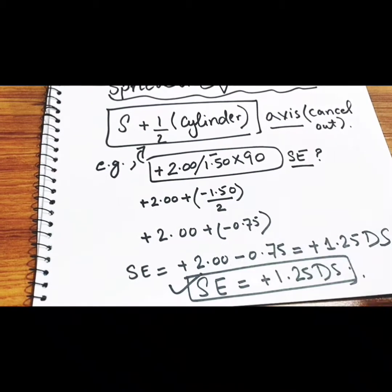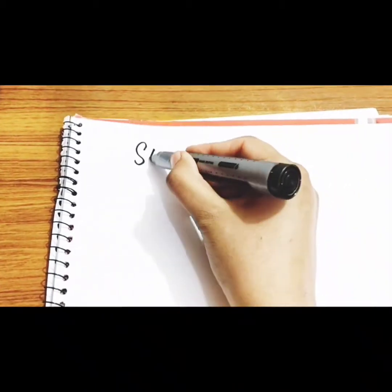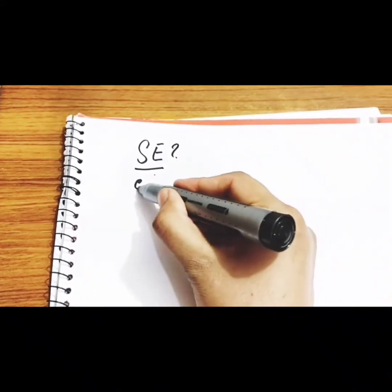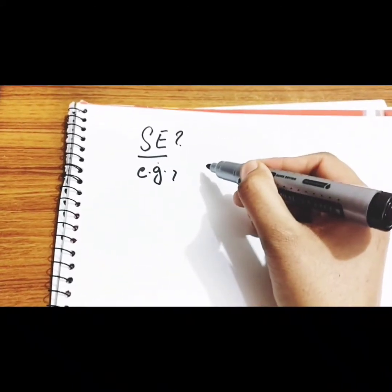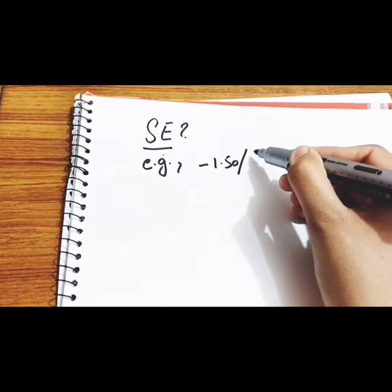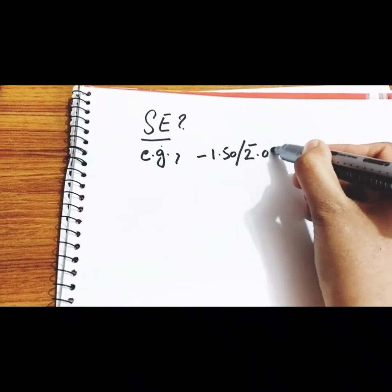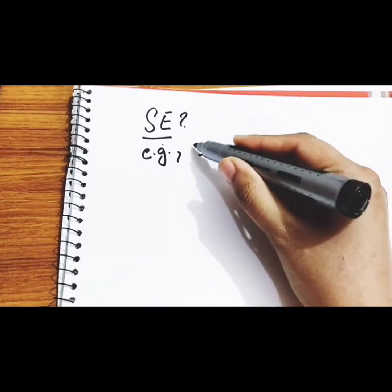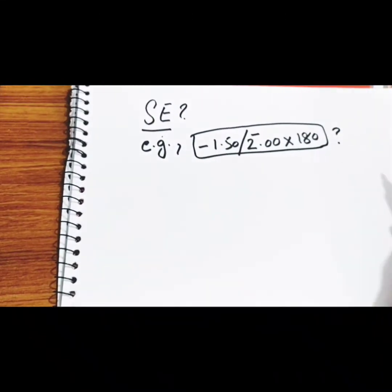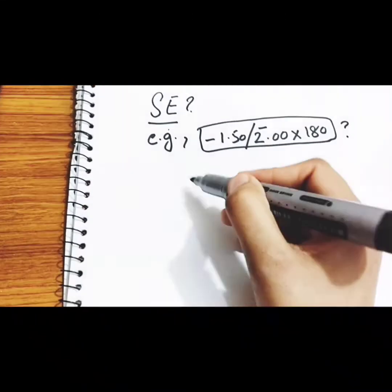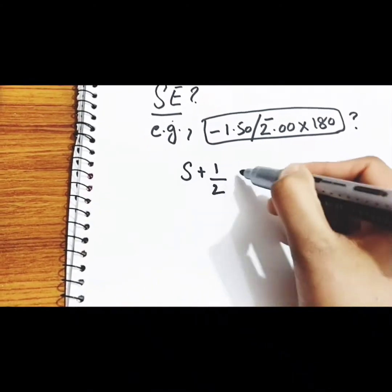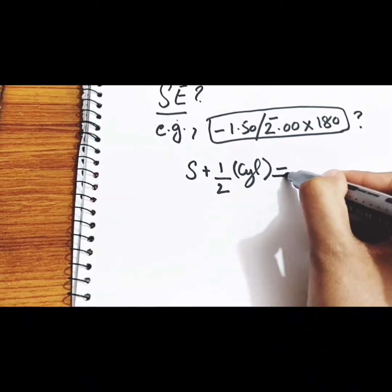This is our spherical equivalent form for the first example. Now in another example: minus 1.50 sphere, minus two cylinder, axis 180. We will convert it into spherical equivalent form. The formula is sphere plus half cylinder, and the axis is cancelled out.